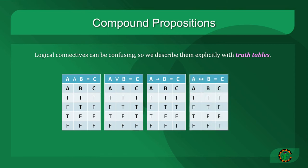Looking at the bidirectional implication, any time A and B match, the compound proposition is true, and any time they do not match, the compound proposition is false.